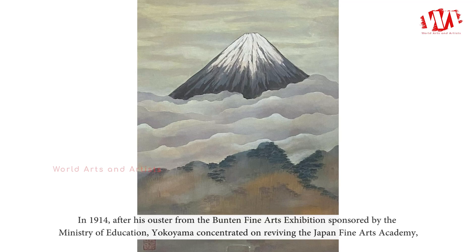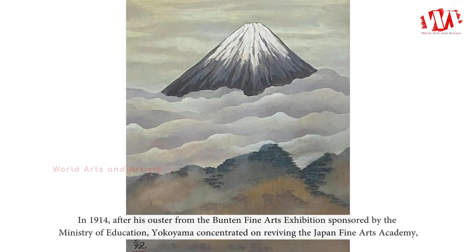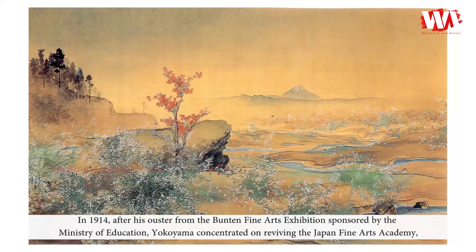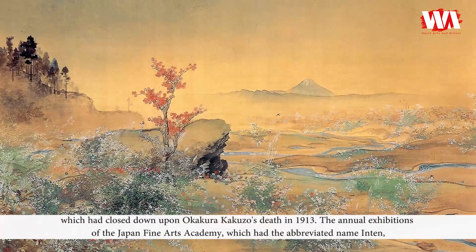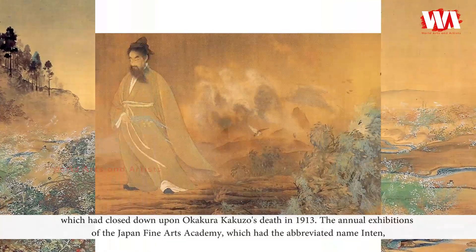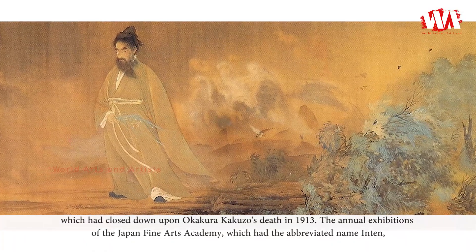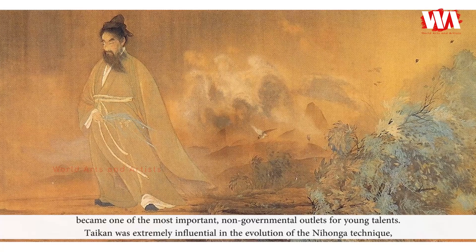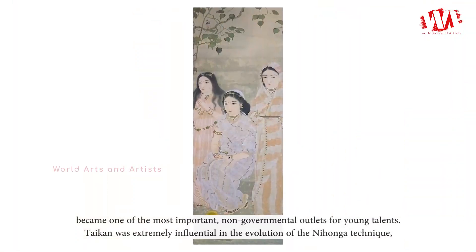After his ouster from the Buntin Fine Arts exhibition sponsored by the Ministry of Education, Yokoyama concentrated on reviving the Japan Fine Arts Academy, which had closed down upon Okakura Kakuzo's death in 1913. The annual exhibitions of the Japan Fine Arts Academy, abbreviated as In-ten, became one of the most important non-governmental outlets for young talents.